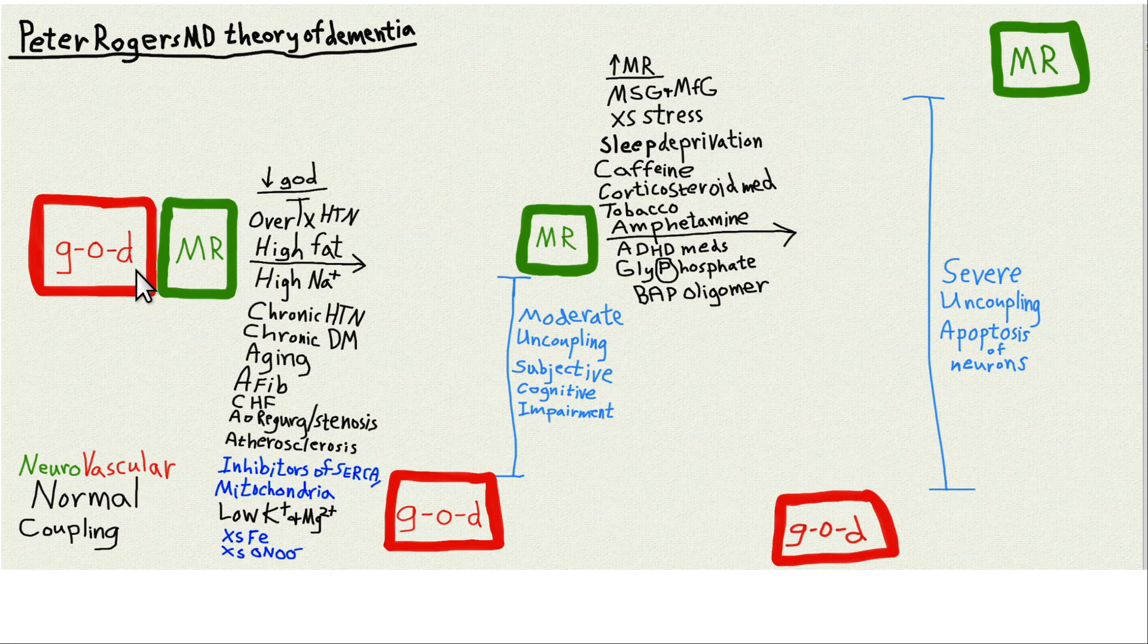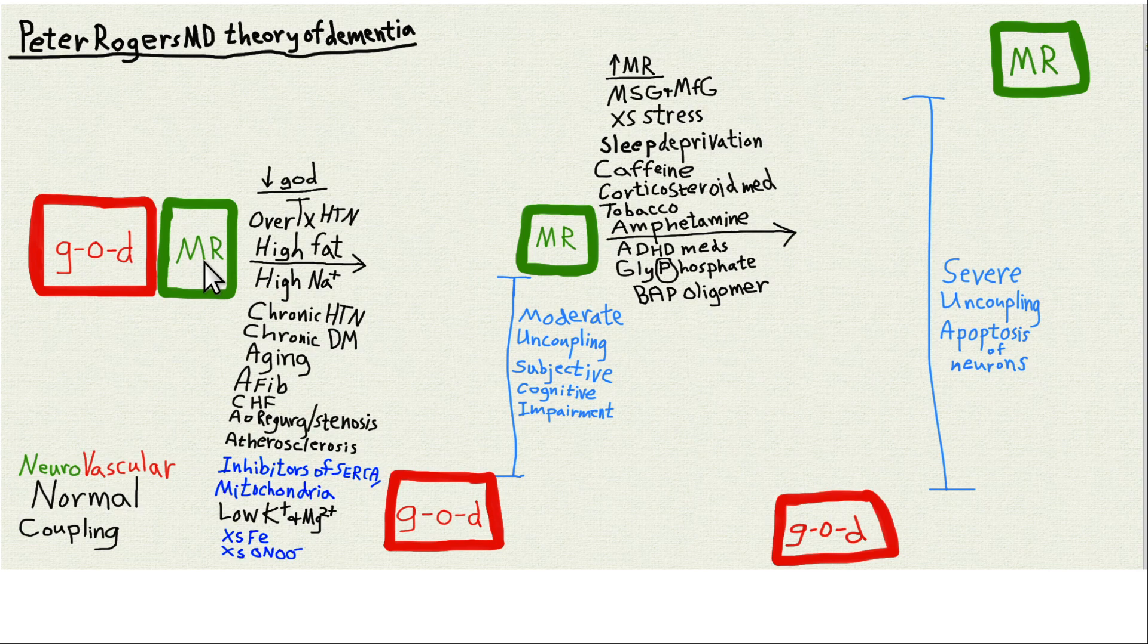That's basically blood flow. And that should be coupled, matched to the same level as M-R. M-R stands for metabolic rate of the neurons. And these should always be about the same, so that you have adequate glucose and oxygen for the neurons here, in their metabolic rate.